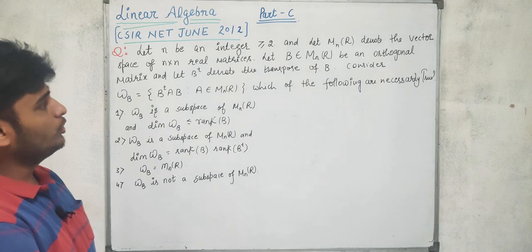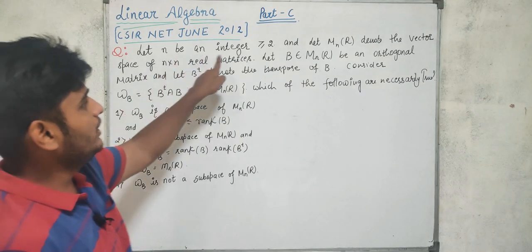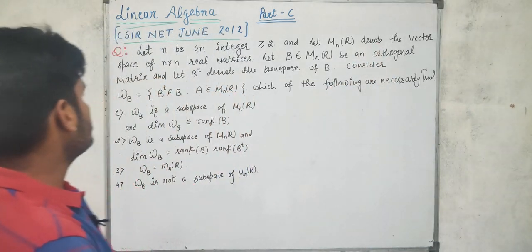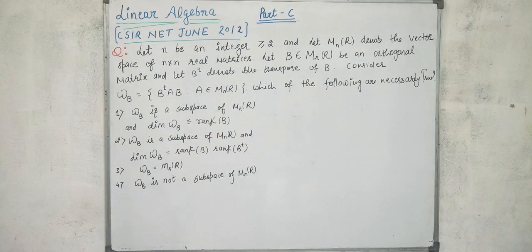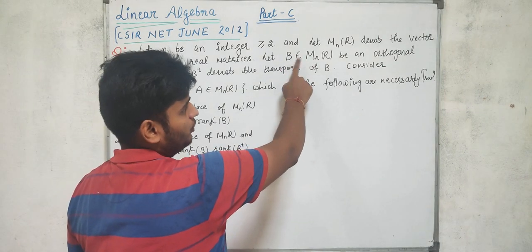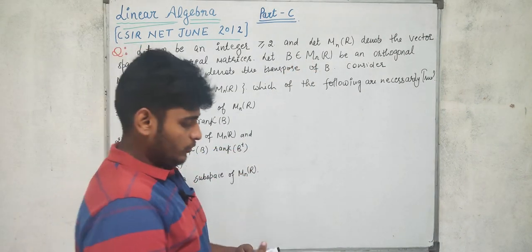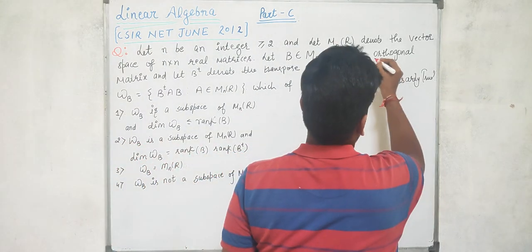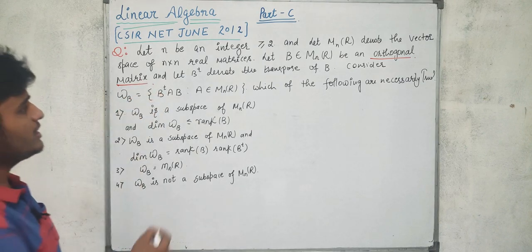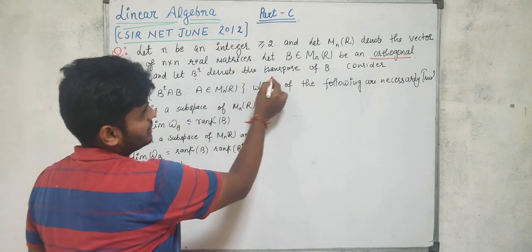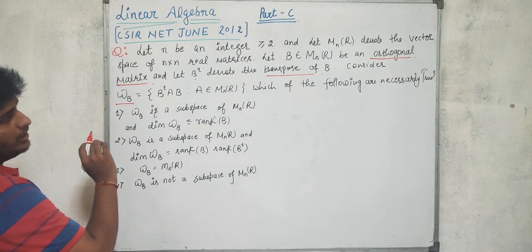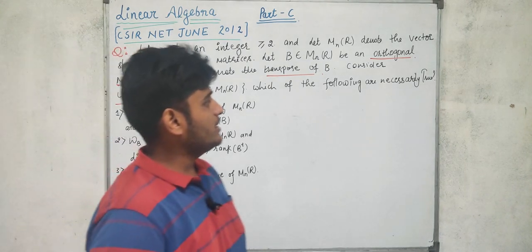The statement of the second question: Let N be an integer greater than or equal to 2, and let M_n(R) denote the vector space of all N×N real matrices. Let B be any orthogonal matrix from M_n(R), and let B^T denote the transpose of B. Consider the set W_B. Which of the following is necessarily true? This is a multi-correct question from Part C.